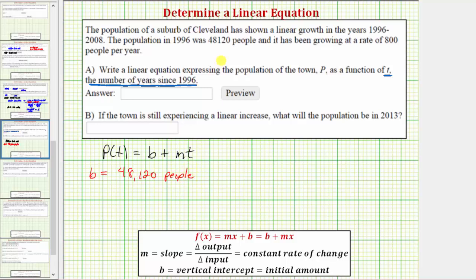Again, the only reason we're using this value as b is because t is the number of years since 1996, and therefore this population is the initial or starting amount.